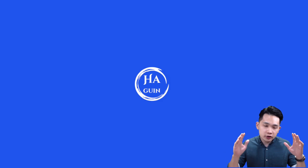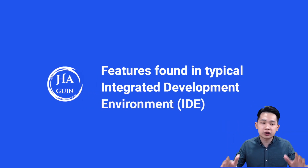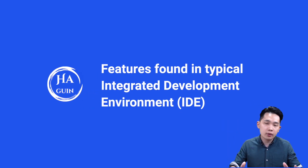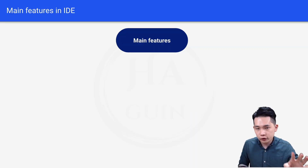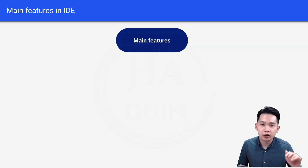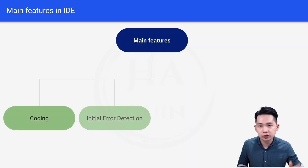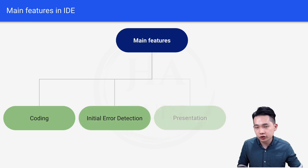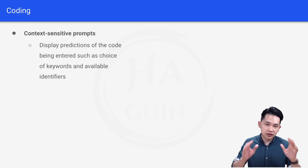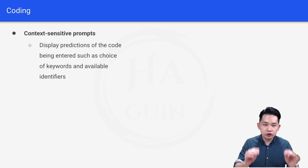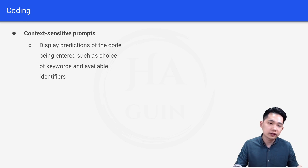Welcome back. Let's talk about features found in a typical Integrated Development Environment, or IDE. There are four main features in an IDE: coding, initial error detection, presentation, and debugging. For coding, we have context sensitive prompts, which display predictions of the code being entered, such as choice of keywords and available identifiers.